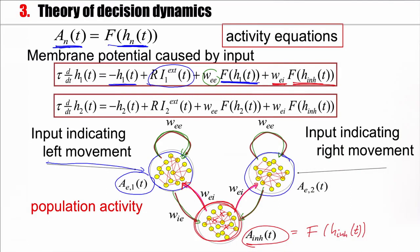Now I can repeat the same argument for the second population. The second population has self-feedback, it receives input from the inhibitory population, external stimuli, and its differential equation will have a decay term.